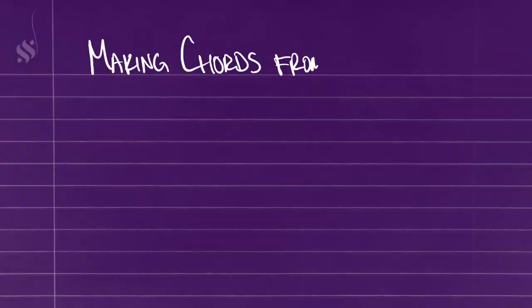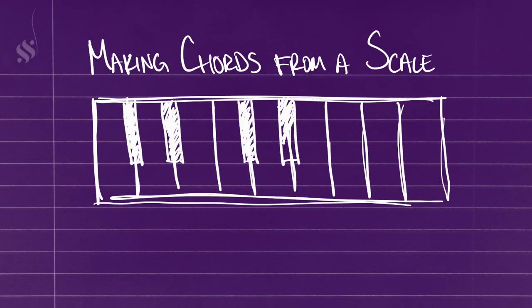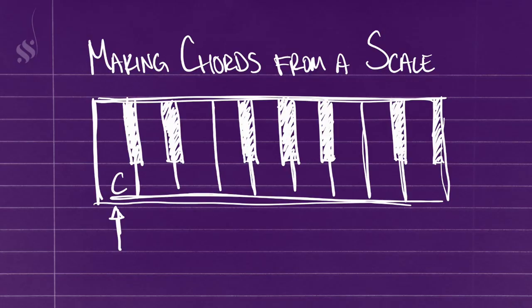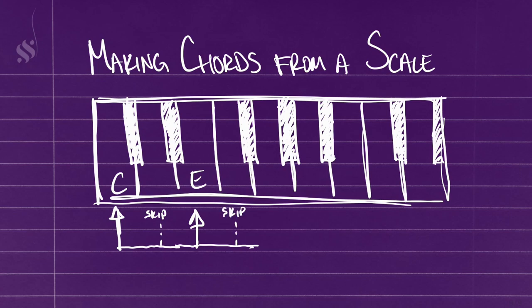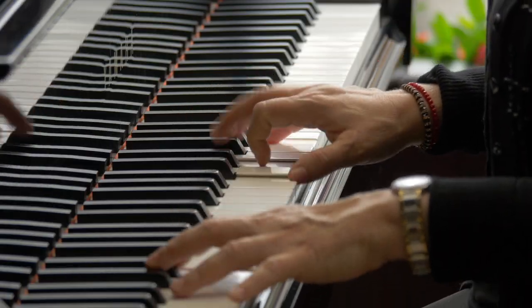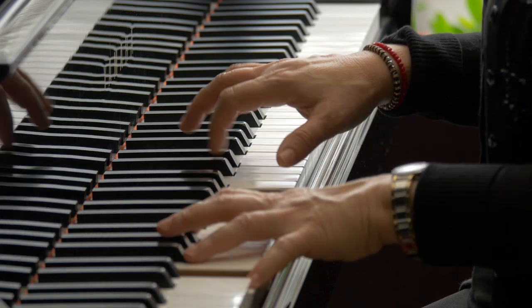Within any major key there are seven diatonic chords, and this is how they work. To make a diatonic chord, you start on a note in the scale — in this case we'll start on C. You play that note, you skip the next one (so we'll skip D), you play the one after that which is E. You skip the next one (so we'll skip F), and then you play the one after that which is G. So you have three notes all separated by a note in between within the scale: C, E, G. If I play those all at the same time, that's C major.